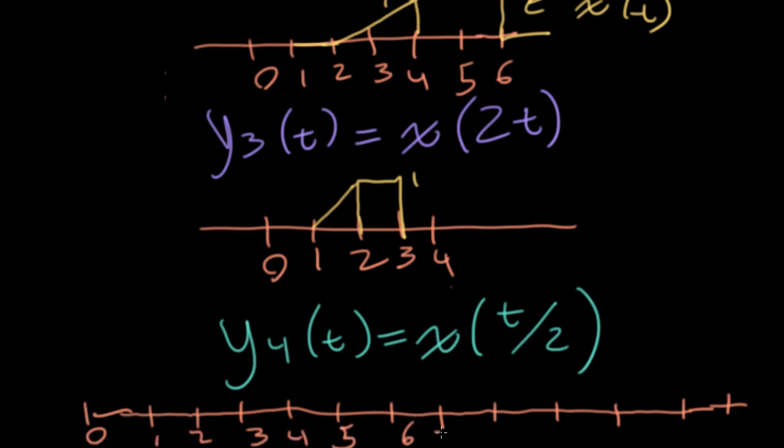In order to get to a certain point in the function x, we have to travel twice as far in time to compensate for this divide by 2. This is going to start at 4. It's going to slowly rise up until 8. And then it's going to hold stationary until 12. So it's going to go, come up here to 1. It's going to hold here for 4. And then it's going to drop back down at 12.